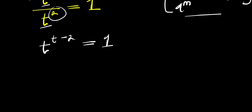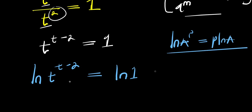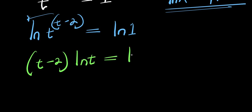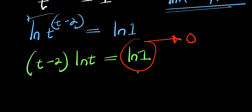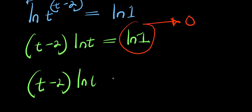At this point we can apply natural log. I have the natural log of t to the power of t minus 2 equals natural log of 1. When you have the natural log of a to the power of p, this equals p times natural log of a. So this t minus 2 comes in front because of this identity, meaning we will have t minus 2 times natural log t equals natural log 1. The natural log of 1 is 0, so we have t minus 2 times natural log t equals 0.